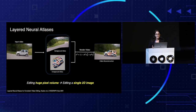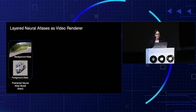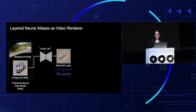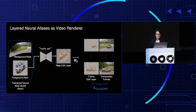Our goal in Text2Live is to apply such edits completely automatically using text alone. Specifically, we treat a pre-trained atlas model as a video renderer. Similarly to the image case, we train a generator on an input image-text pair, but here our input to the generator is an atlas image rather than a natural image, and our generator predicts an atlas edit layer. Rather than applying losses directly on the atlas, we map the edits back to frames using the pre-trained atlas model and apply our losses directly on those frames. This not only gives us natural-looking images but also allows us to exploit the richness of the video by rendering multiple different viewpoints during training.